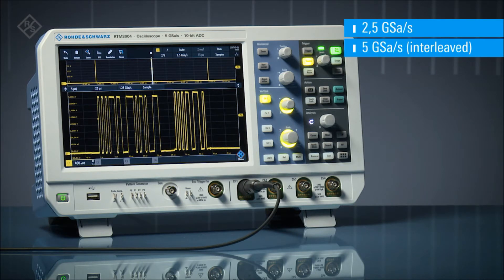Deep memory allowed it to retain sufficient sample rate for full bandwidth. Scopes with less memory would be forced to reduce sample rate and miss important signal detail.